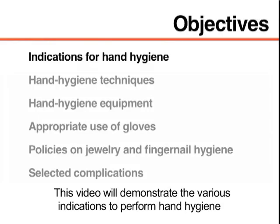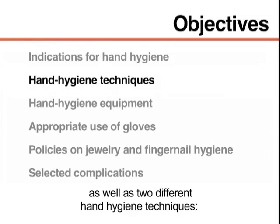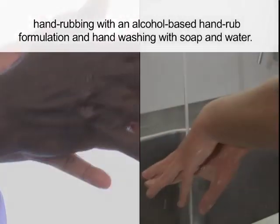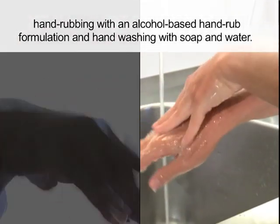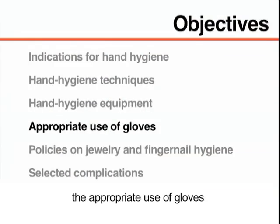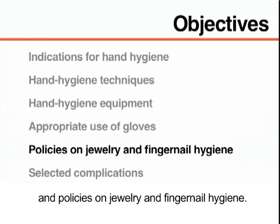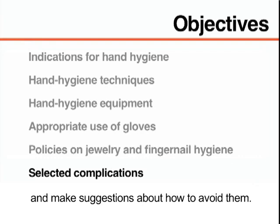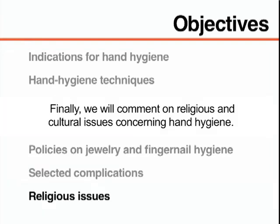This video will demonstrate the various indications to perform hand hygiene as well as two different hand hygiene techniques: hand rubbing with an alcohol-based hand rub formulation and hand washing with soap and water. This video will also review hand hygiene equipment, the appropriate use of gloves, and policies on jewelry and fingernail hygiene. We will also review selected complications associated with hand hygiene and make suggestions about how to avoid them, and comment on religious and cultural issues concerning hand hygiene.